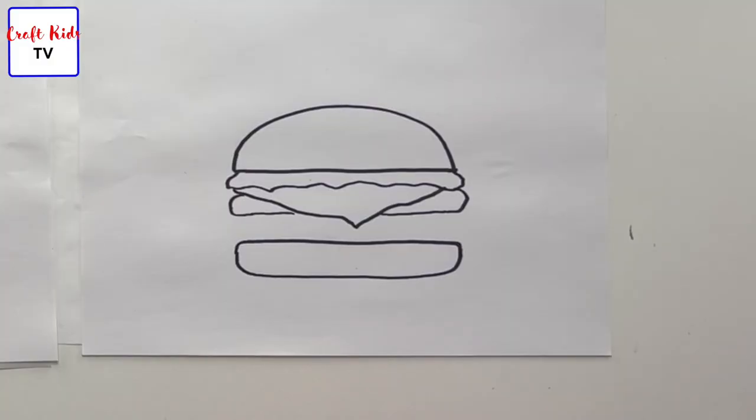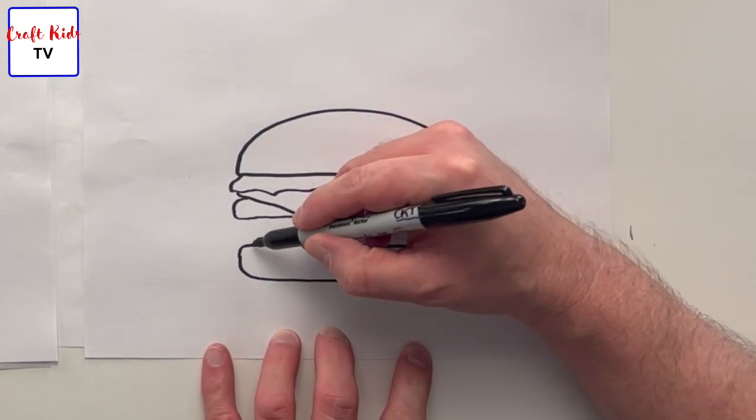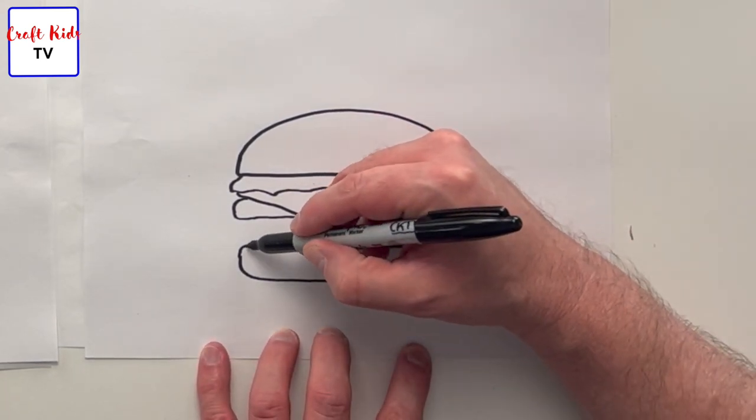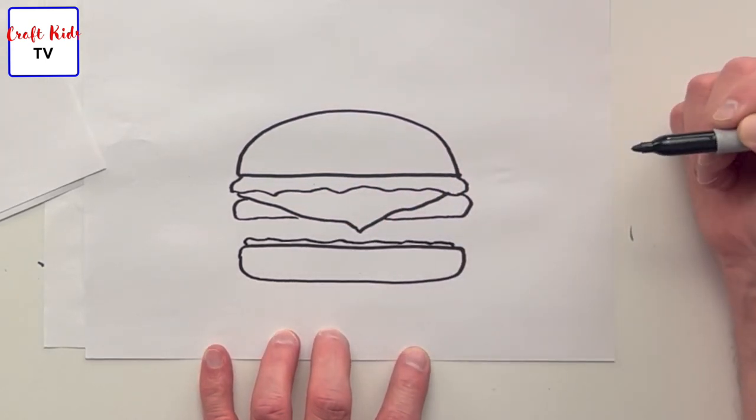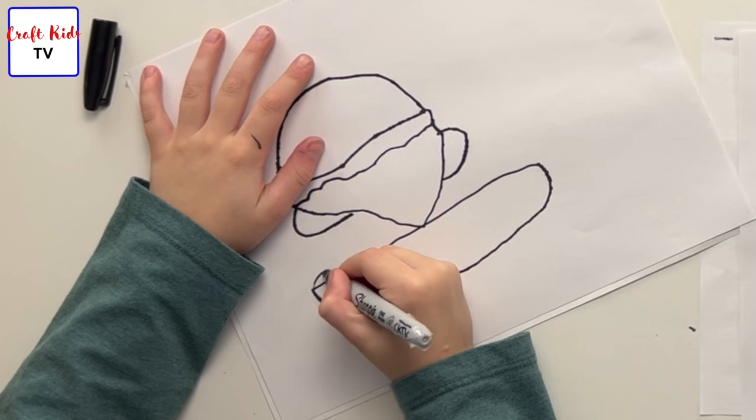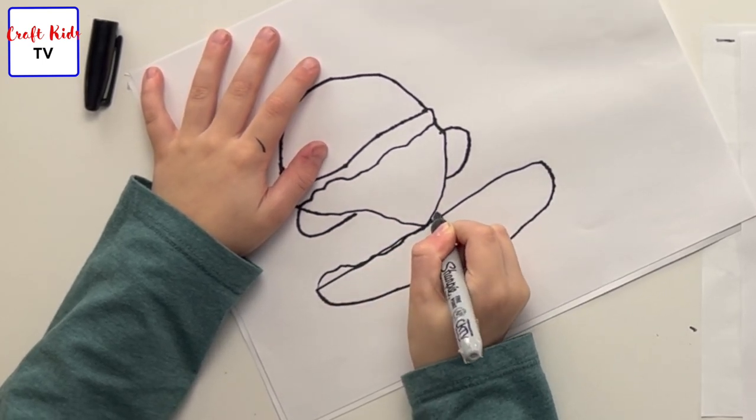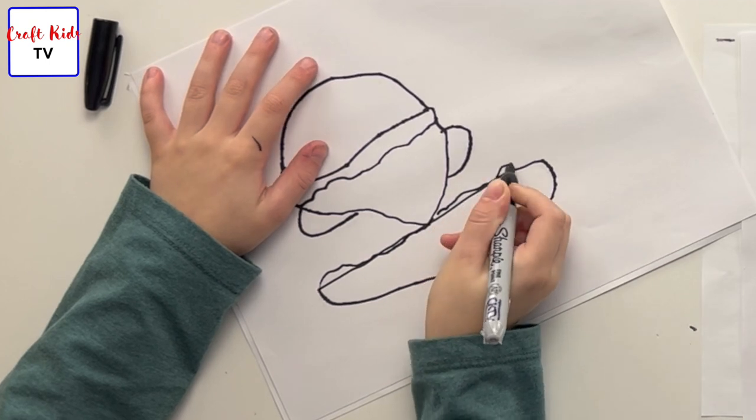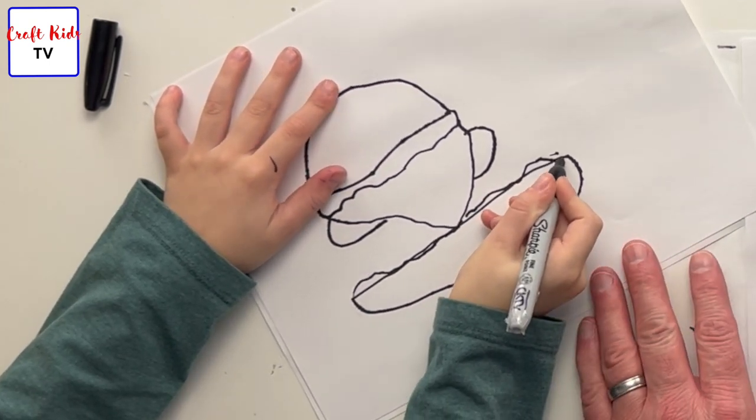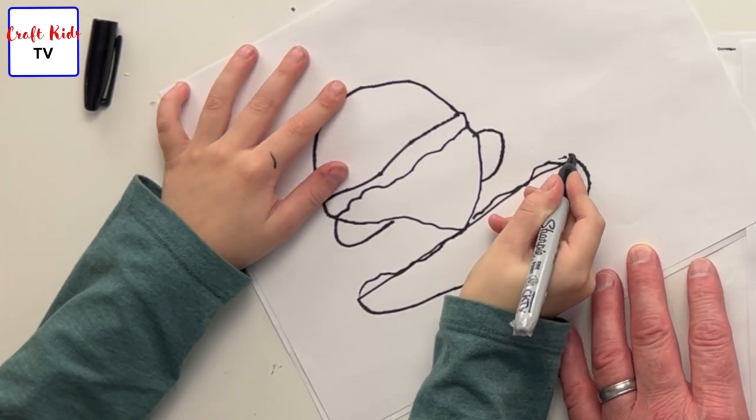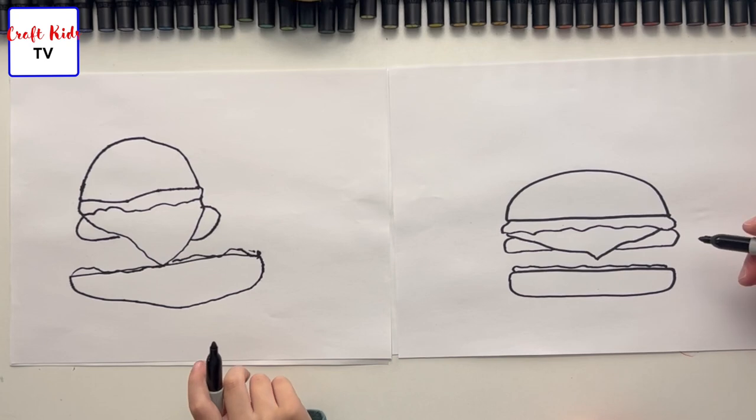Now underneath here we're going to have some ketchup on the bottom - just a really thin layer of ketchup. That's fine, just a little thicker than that. Maybe we don't draw any more cheese. I think that's enough cheese. We'll just draw the other patty.